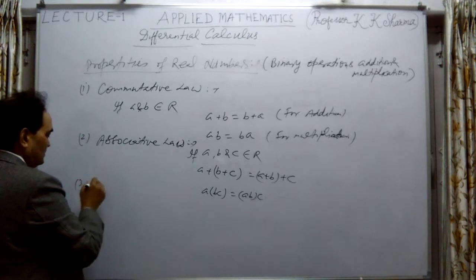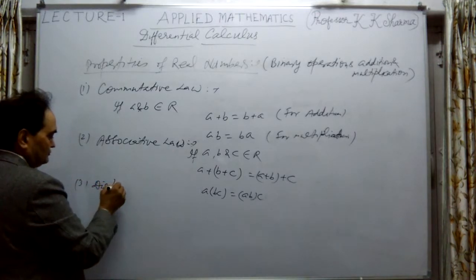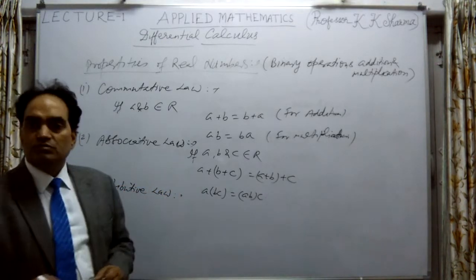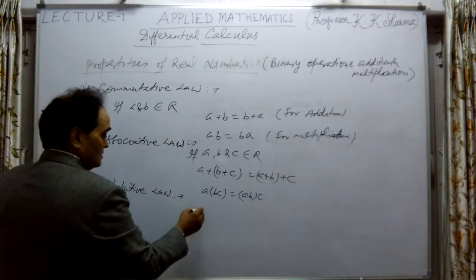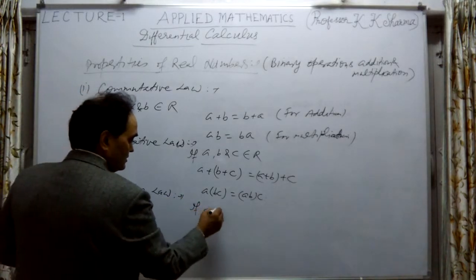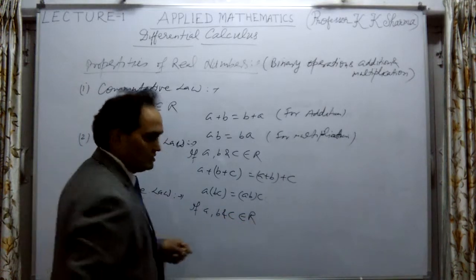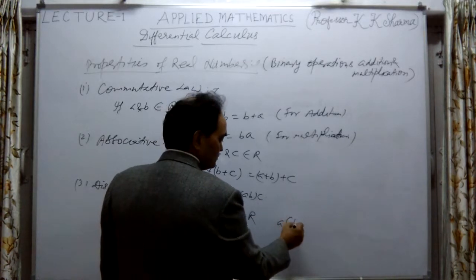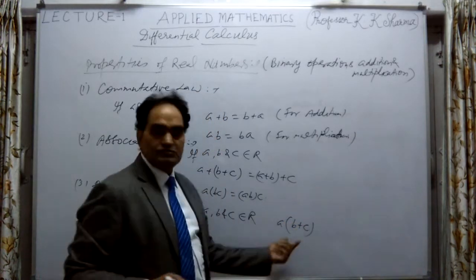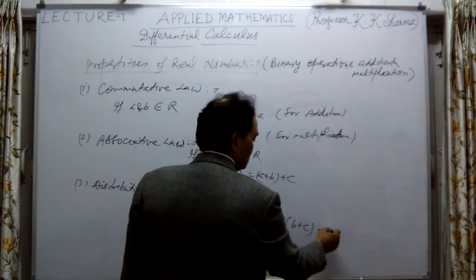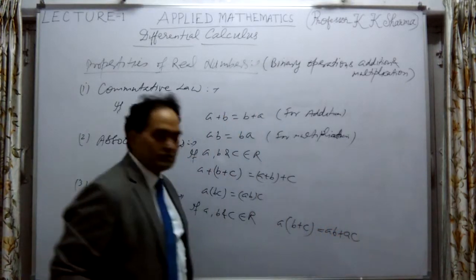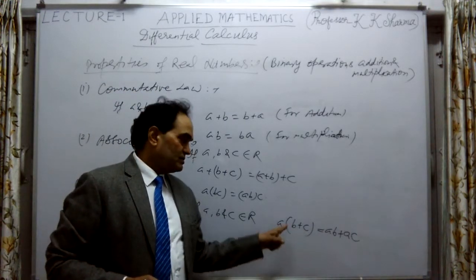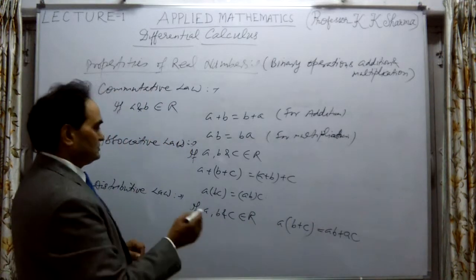The third property is the distributive law. If A, B, and C belong to R, then A · (B + C) = AB + AC. Multiplication is distributed upon the addition of two numbers. This is the distributive law, where multiplication and addition are combined.